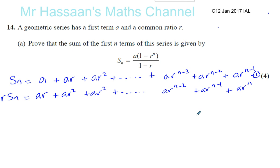So basically now, what you'll see is, let's call this line 2. In line 1 and line 2, you've got all the terms the same: AR, AR squared, AR cubed, AR to the power of n minus 3, AR to the power of n minus 2, AR to the power of n minus 1.